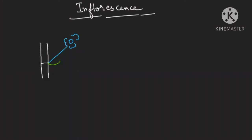Let us assume this is our eyes and we are seeing from here. So if you see according to the viewer, this is the anterior side, and opposite will be posterior. So bract is on the anterior side and the mother axis is on the posterior side. The flower is born in the axle of a leaf.